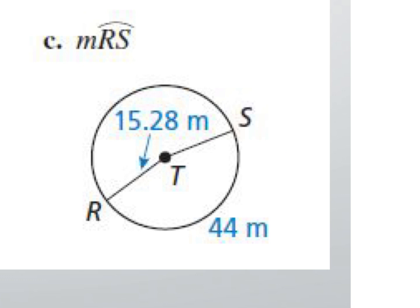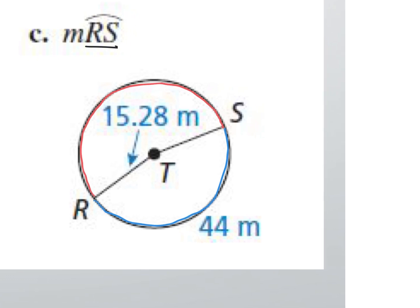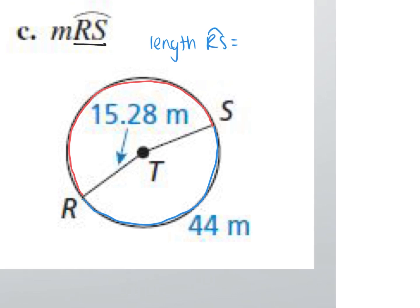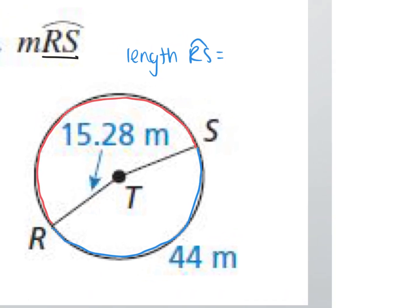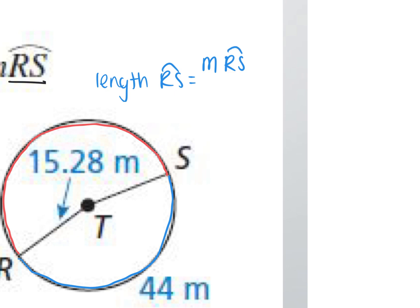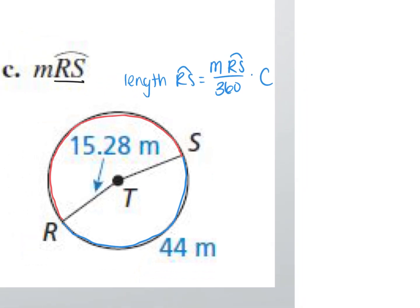Letter C: the measure of arc RS. Be careful — it uses 2 letters, so it has to be a minor arc. Is it the top or bottom? Bottom, because it's smaller than 180 degrees. The notation matters. We set up: length of RS equals the measure of RS over 360 times C. We know the arc length is 44 and the radius is 15.28, so circumference is 2π times 15.28.